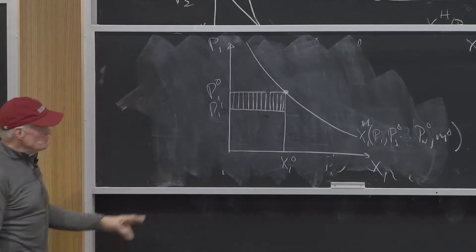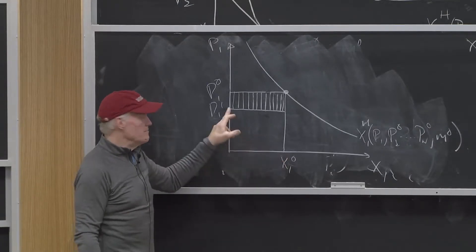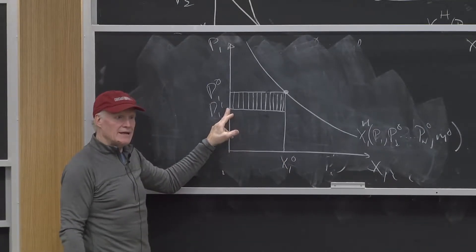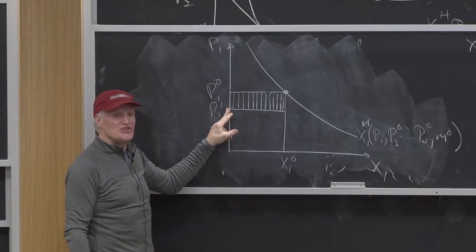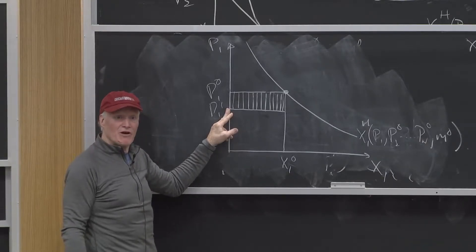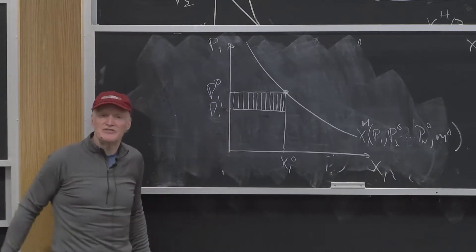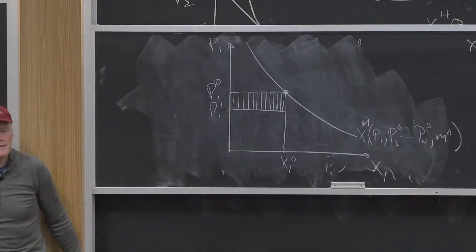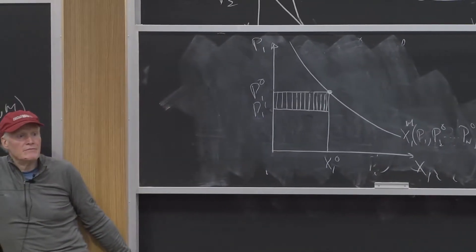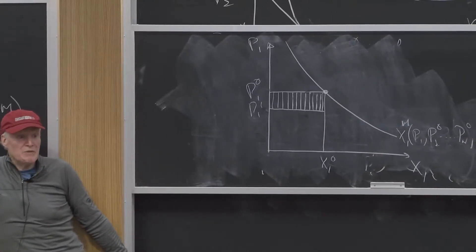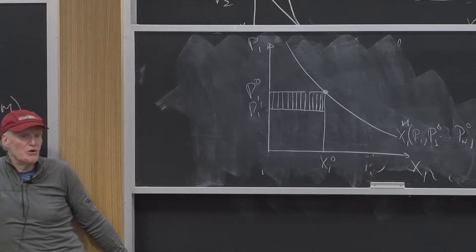If I use the period one quantity to measure my gain, I'm going to tend to understate my gain from the fall in price. Why? Why does it tend to understate my gain? It says that's how much you gain if you couldn't substitute at all. It misses the substitution.